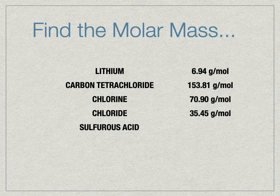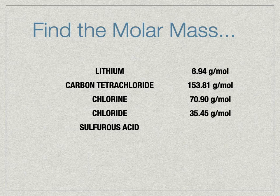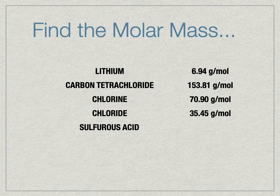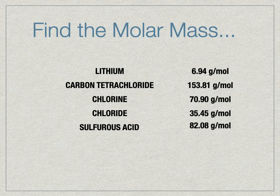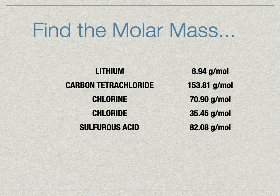Sulfurous acid. This comes from the sulfite ion, SO₃²⁻. Because it's 2⁻, you need two hydrogens, giving H₂SO₃. Two hydrogens, one sulfur, three oxygens — you should have gotten 82.08 grams per mole.